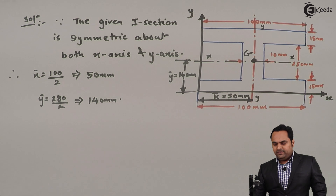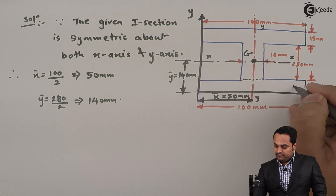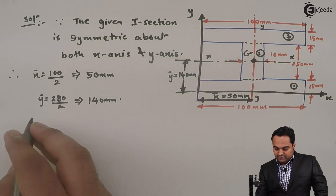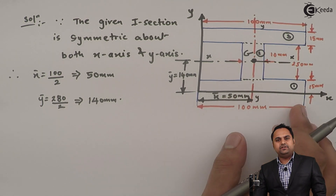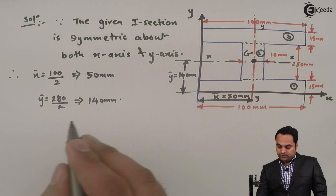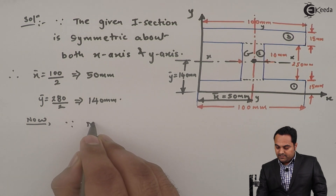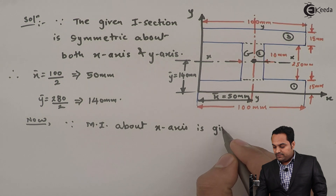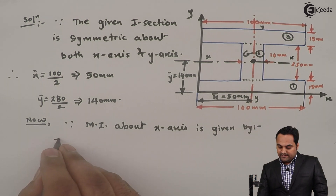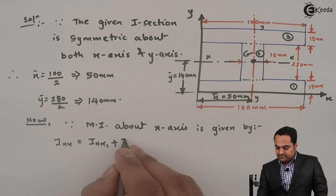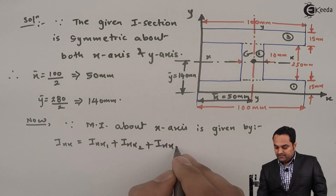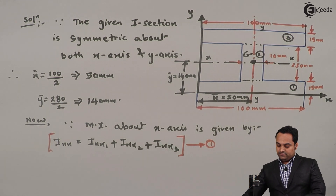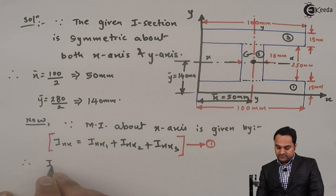Once we have located the centroid, we can calculate the MI. We divide the I-section into three rectangles: rectangle one (top flange), rectangle two (web), and rectangle three (bottom flange). We are going to find the moment of inertia about Ixx, the x-axis of the complete I-section. Ixx equals Ixx1 plus Ixx2 plus Ixx3, adding up all three moment of inertia values.